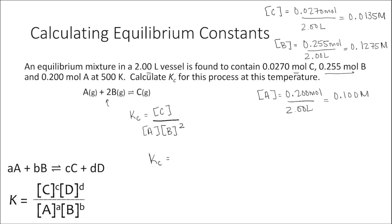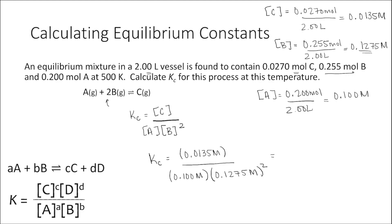Now we plug these molar concentrations into our expression and solve for Kc. Kc equals 0.0135 M divided by 0.1 M for A times 0.1275 M squared for B. Taking significant figures into account, we get an equilibrium constant for this reaction equal to 8.3.